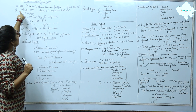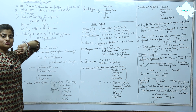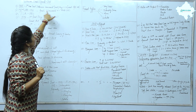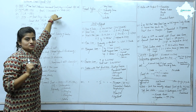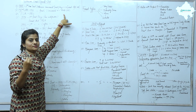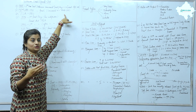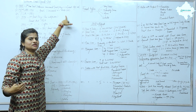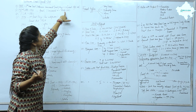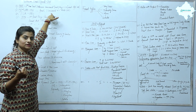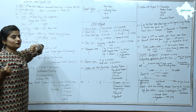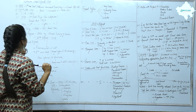In the 42nd Constitution Amendment Act 1976, forests were moved from the State List to the Concurrent List. You know there are three types of lists: the Union List, the State List, and the Concurrent List. So forests came into the Concurrent List. Then there is the Forest Conservation Act of 1980, which we have studied a little bit earlier.